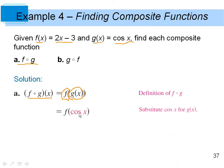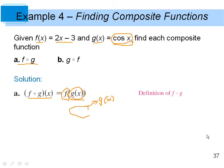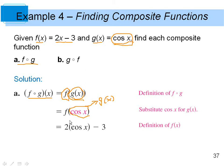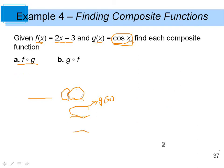The g of x function is equivalent to the cosine of x, so we replace g of x with cosine of x, leaving us with f of cosine of x. When we input the cosine function into f: the f of x function is two times my input minus three. My new input is cosine of x, so we replace x with cosine of x and get two times cosine of x minus three. That is equal to f of g of x.